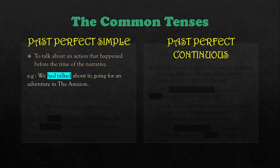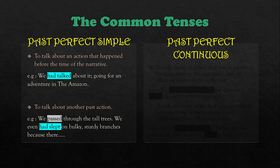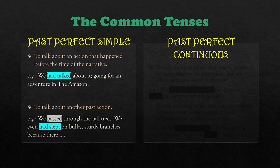Past perfect simple is something like past simple as well. Example sentence: 'We had talked about going for an adventure in the Amazon' — mereka dah berbincang pada masa yang telah berlalu. We also use past perfect simple to talk about another past action — for example: 'We passed through the tall trees' and 'we had even slept on bulky, sturdy branches' — bukan sahaja melalui kawasan pokok-pokok tinggi, but they also had to sleep on branches.